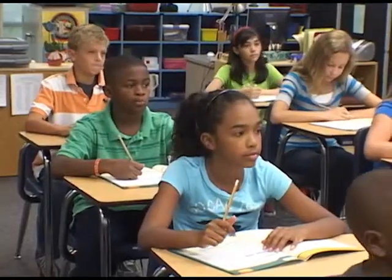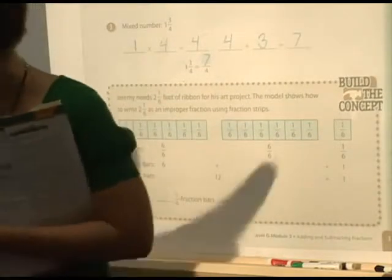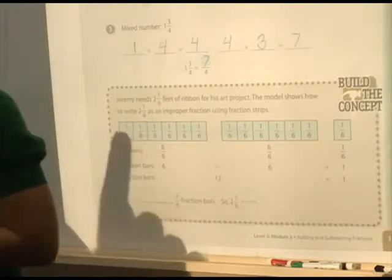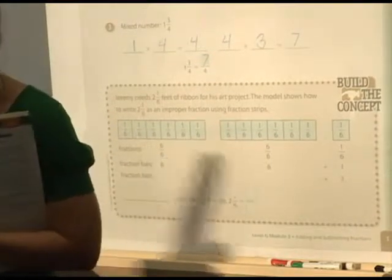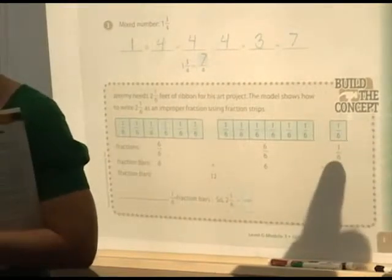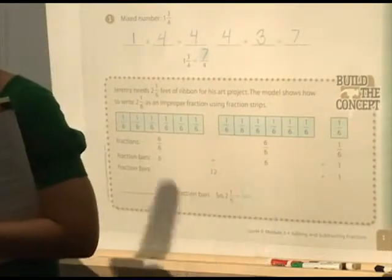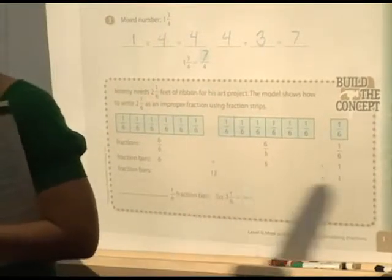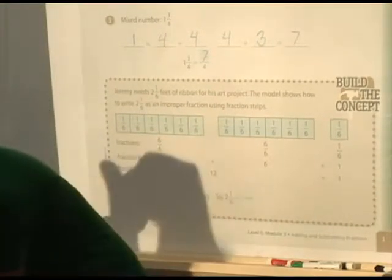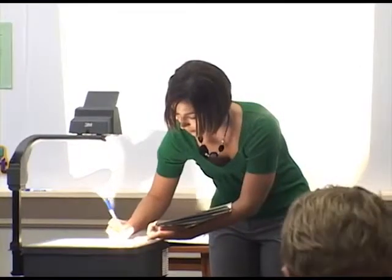On this next one, we have two wholes because we have two as our whole number. So we have two bars that have been divided into six, giving us six, six, and six, six — with one extra, just one of those six left over to represent two and one-sixth. So we have six plus six, which gives us twelve. Twelve and one gives us thirteen — thirteen one-sixth bars.